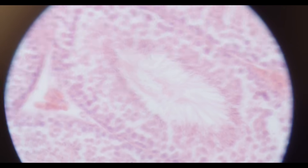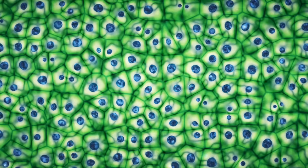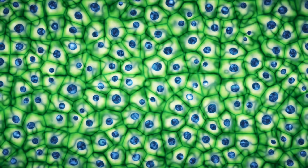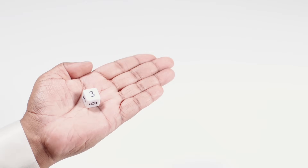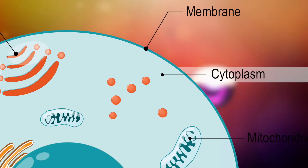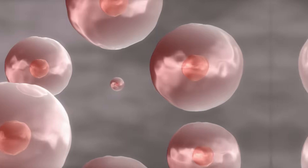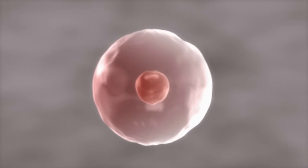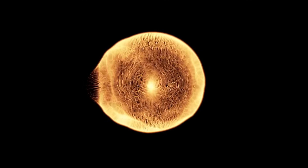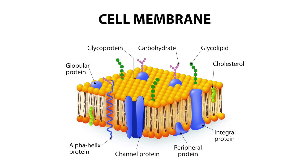Microscopes make small things look bigger. Under a microscope you can see the different parts of a cell. Just like blocks, cells have different shapes, colors, designs, and jobs. There are three basic parts of animal and plant cells. The nucleus is the brain of the cell — it basically controls the cell. Cytoplasm is everything outside of the nucleus but inside the cell wall; it is a large gel-like fluid.